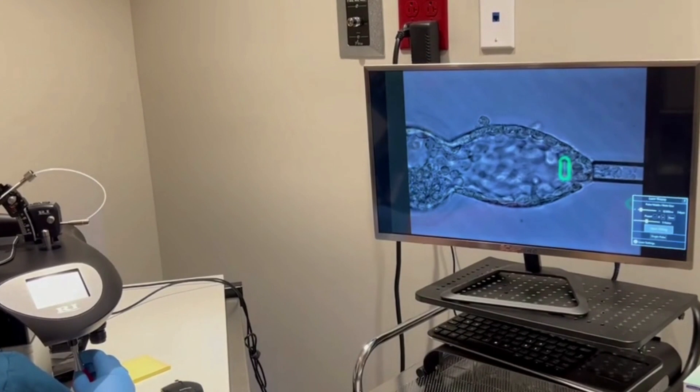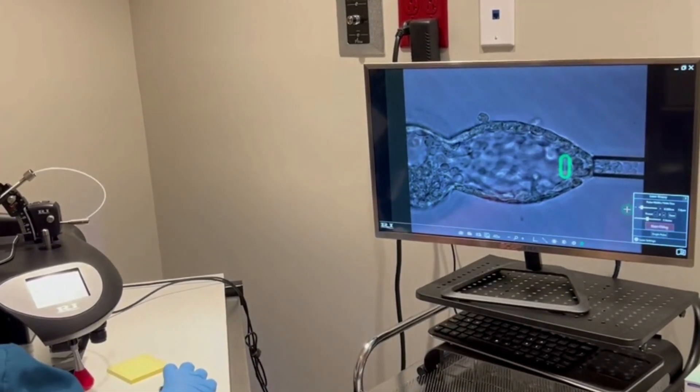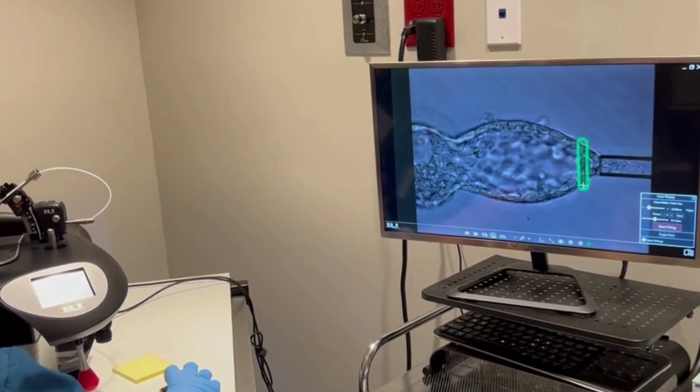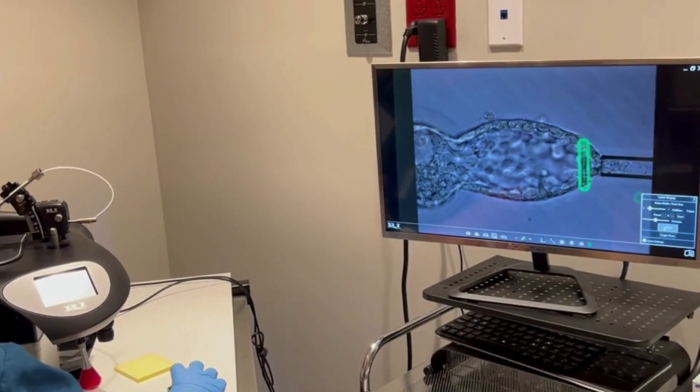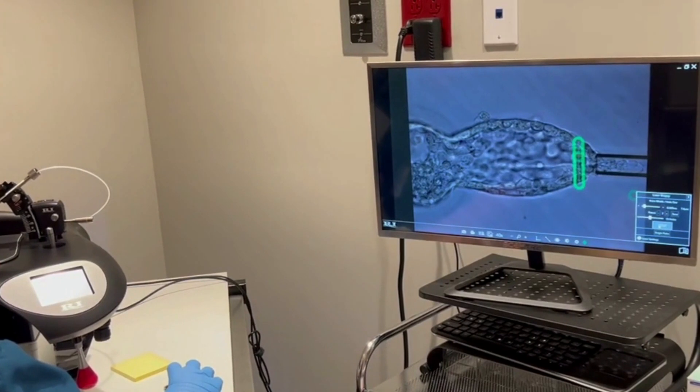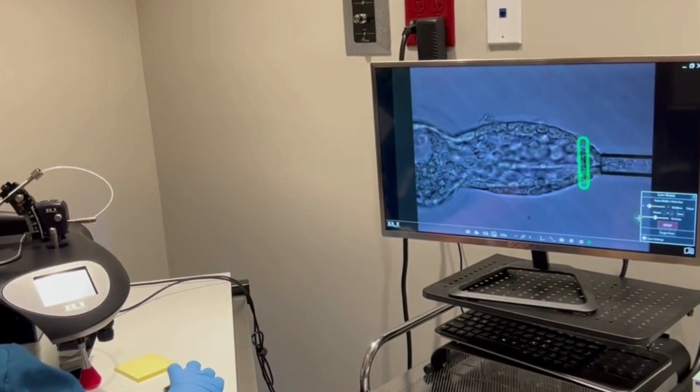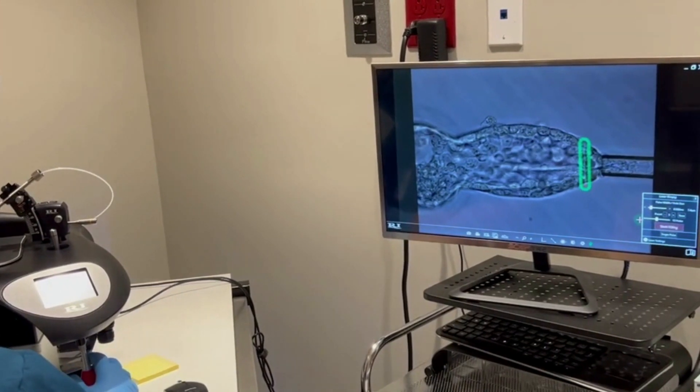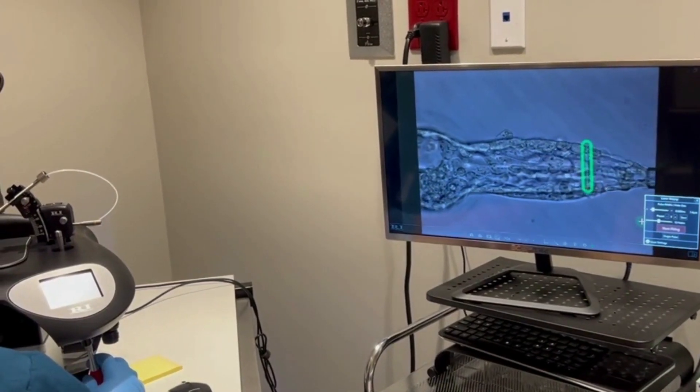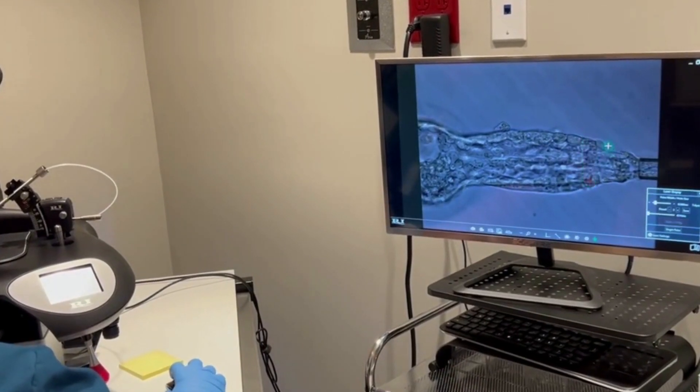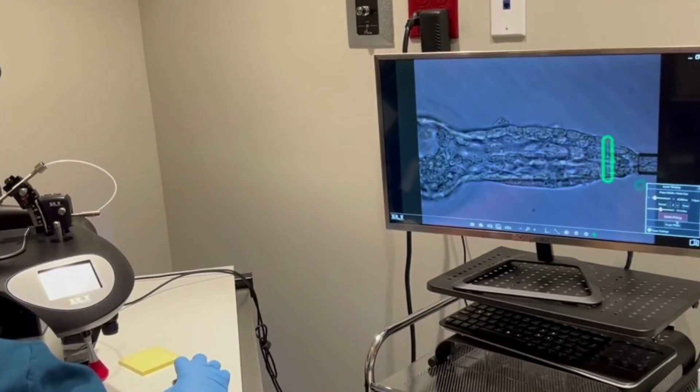We try to be as gentle as possible so that there is not any trauma to the embryo. And we are also careful to avoid the inner cell mass inside the embryo, which you can see there on the left side. The trophectoderm cells are what will ultimately become the placenta and the inner cell mass will grow into the future baby. The embryo does have the capability of regenerating the cells that have been removed during biopsy.